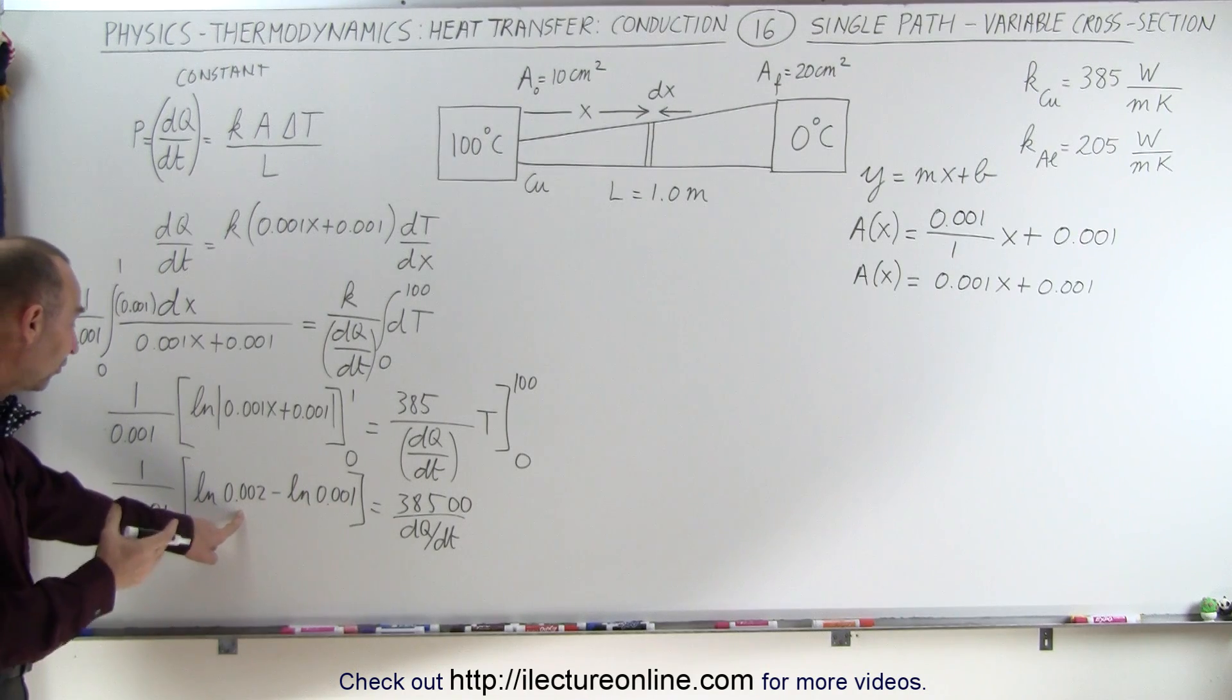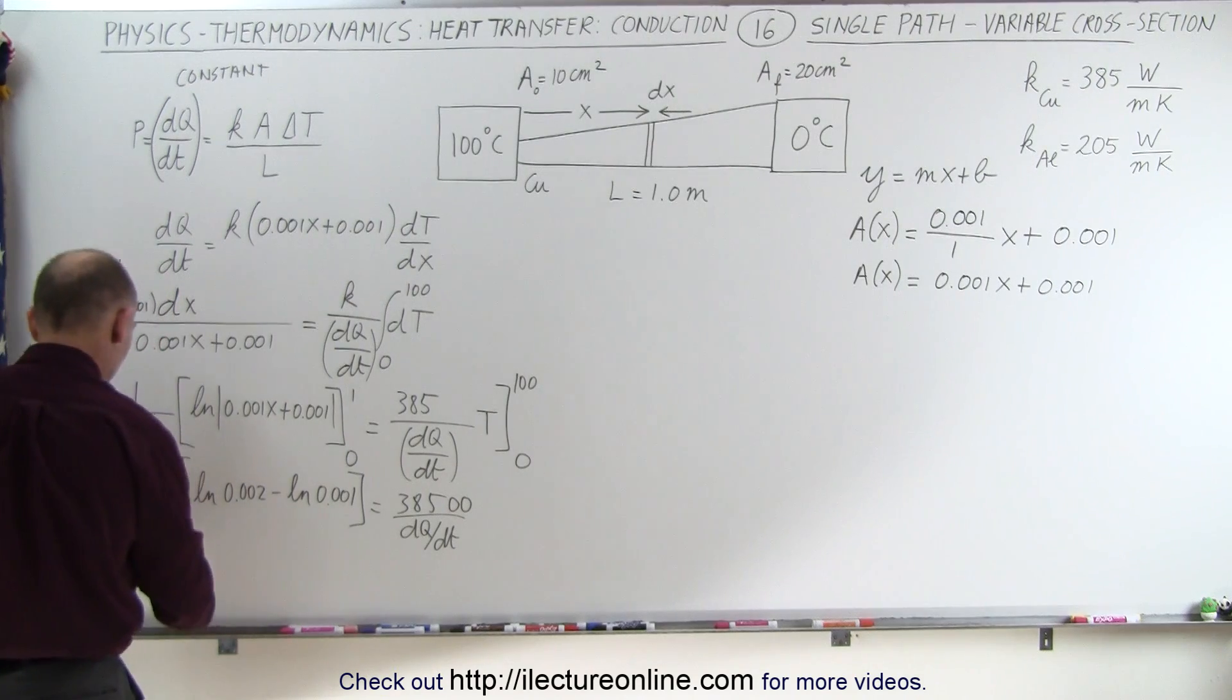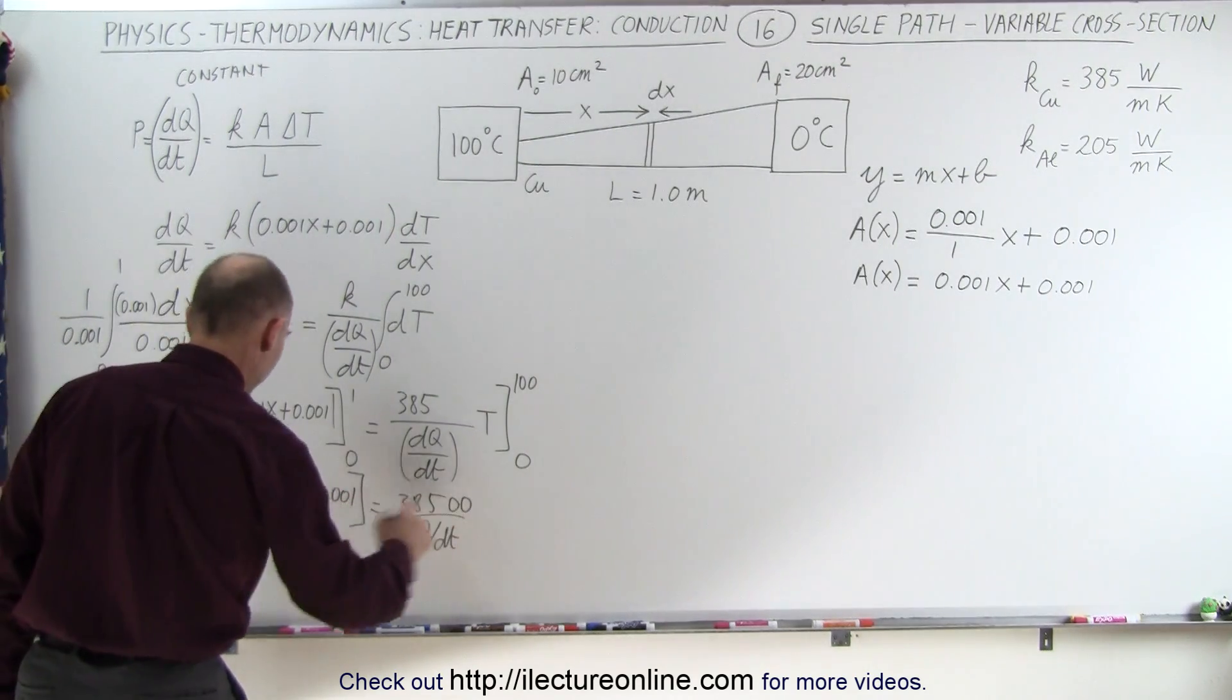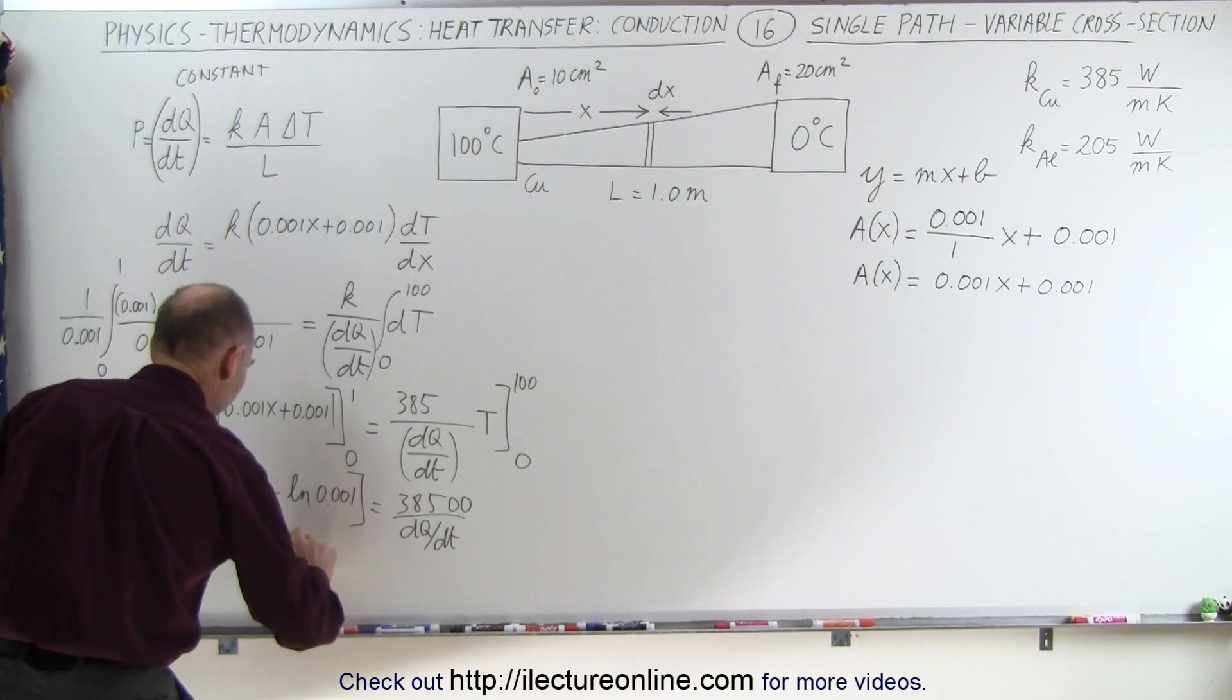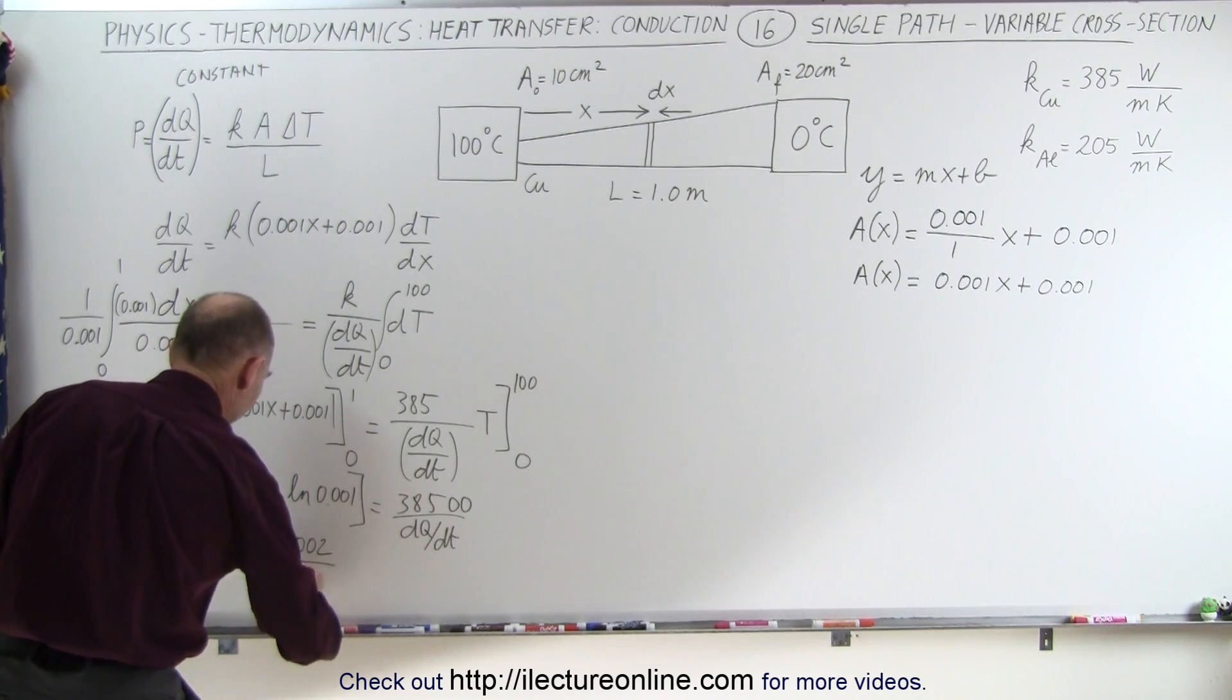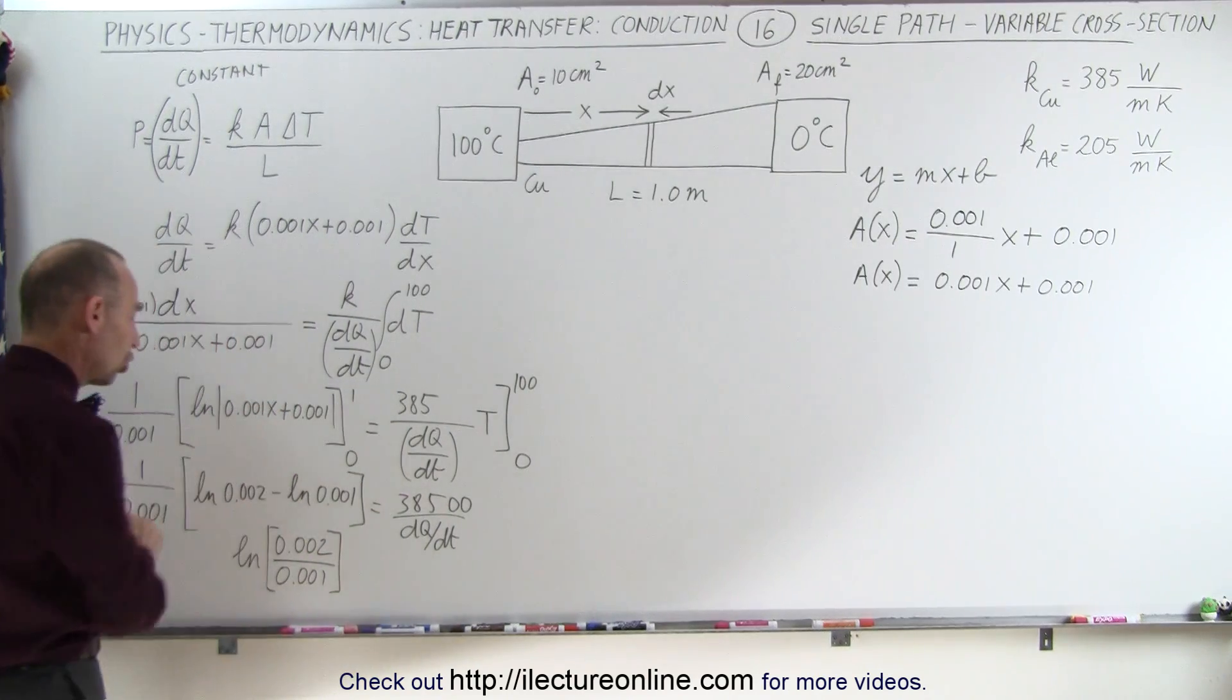And of course, since we have the difference of two natural logs, we can write it as the natural log of the quotient of the two. And we can then move this over to the other side. So here we get the natural log of 0.002 divided by 0.001, or simply said, this is the natural log of 2...